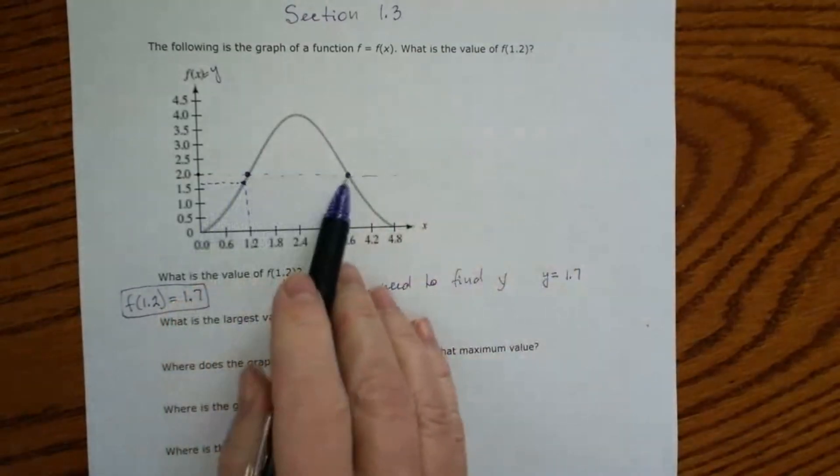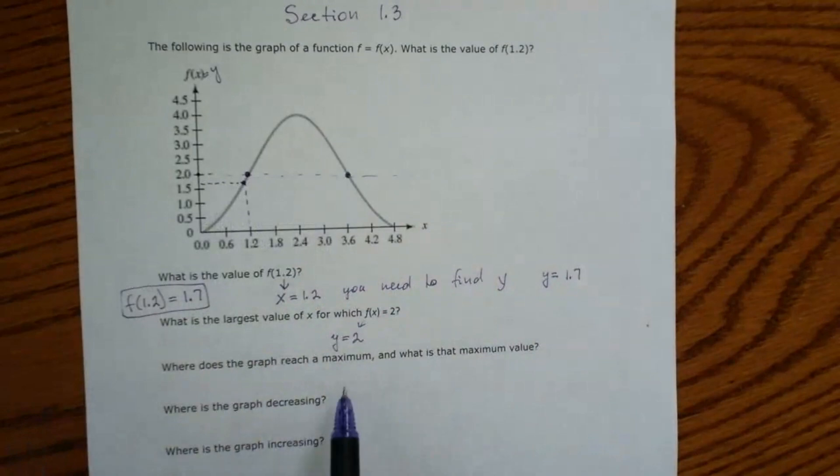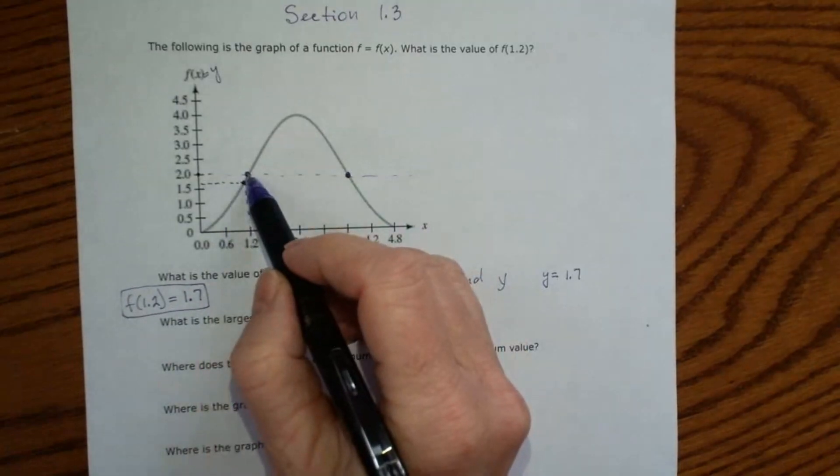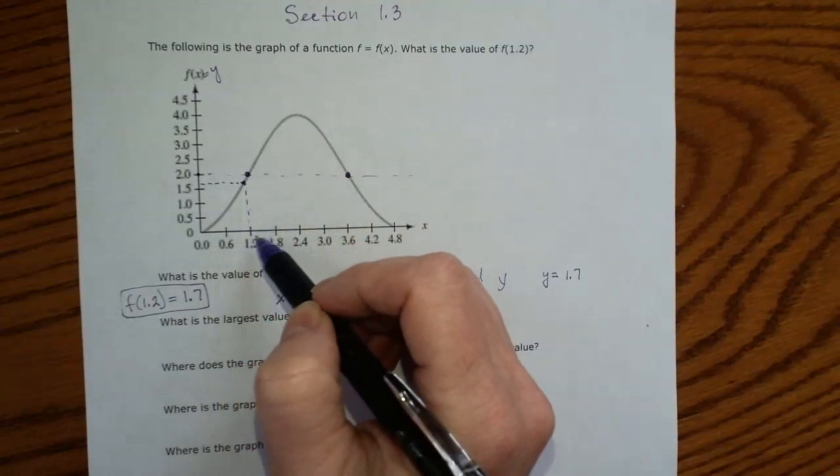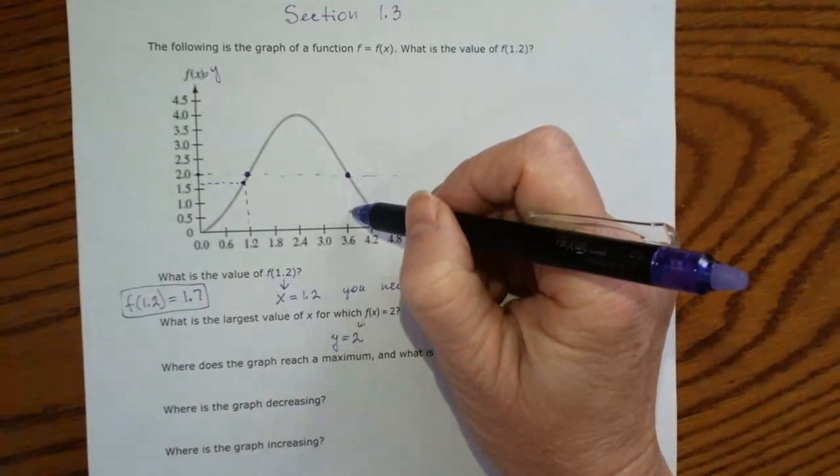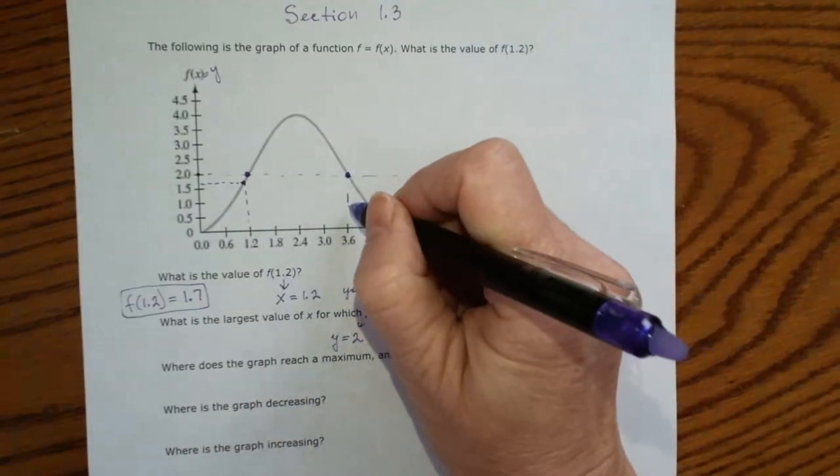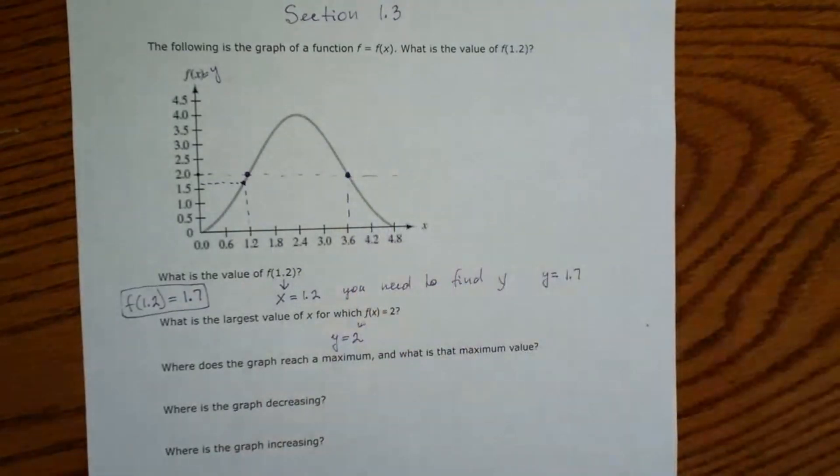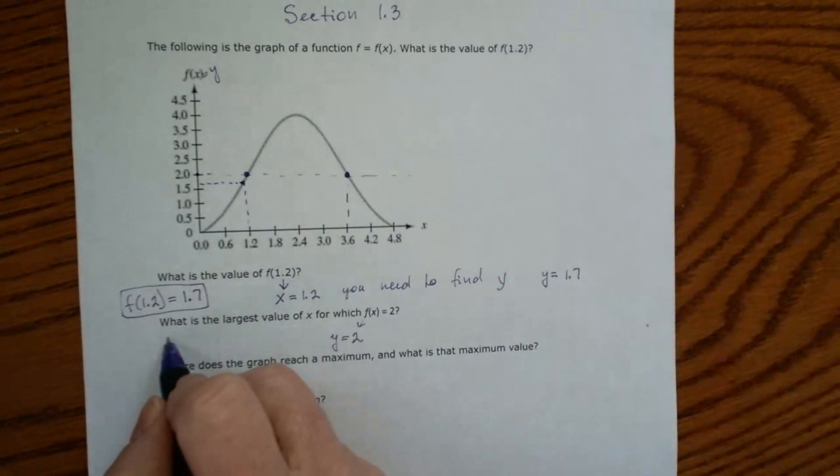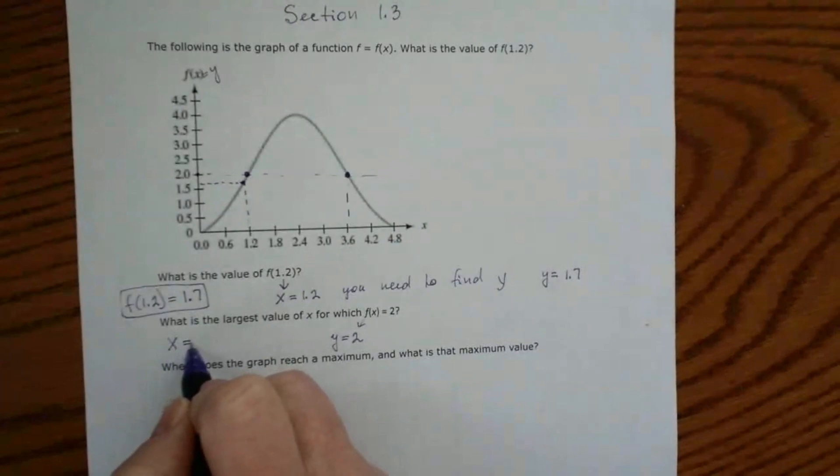So we see two points. But they ask you what is the largest value. So for this point, the x-coordinate is about 1.3 and for this point, the x-coordinate is about 3.6. And they said larger, so the final answer will be x is equal to 3.6.